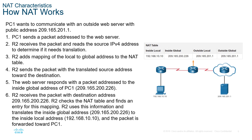How does NAT work? Let's assume PC1 wants to communicate with the server. The issue is PC1 has a private address, so it won't be allowed on the internet. PC1 will send a packet addressed to the web server to the default gateway, which will forward it appropriately. R2 is the NAT router — our internet-facing device. R2 will receive the packet and read the source IP address to determine if it needs translation. Since private IPs aren't allowed on the internet, it will determine that translation is needed.